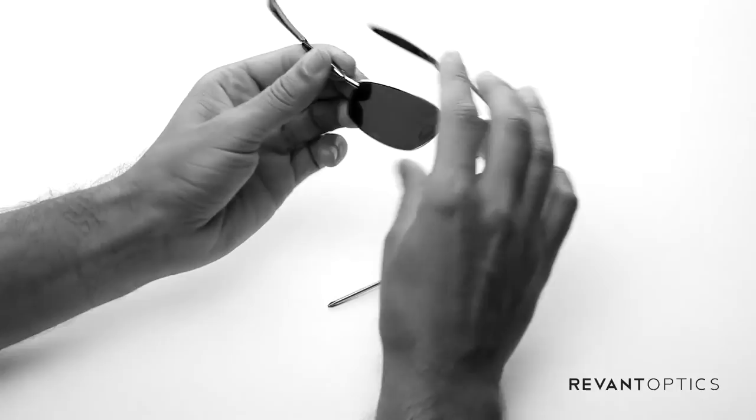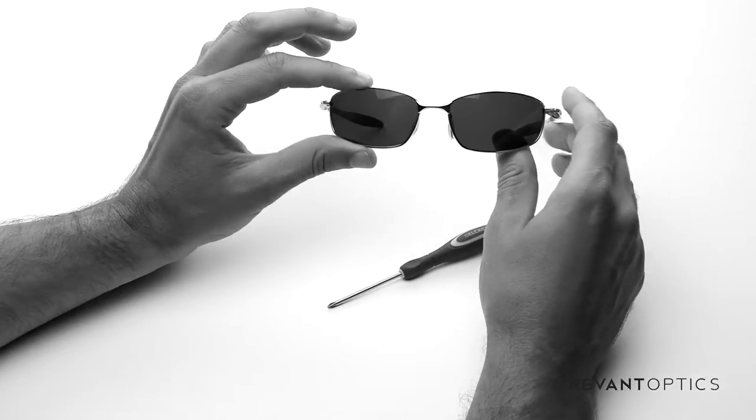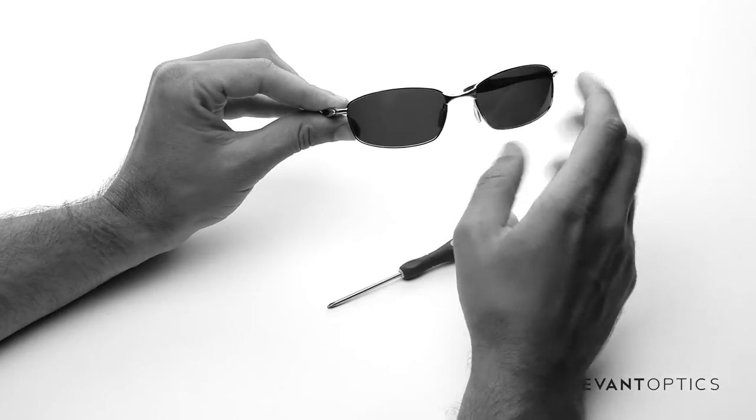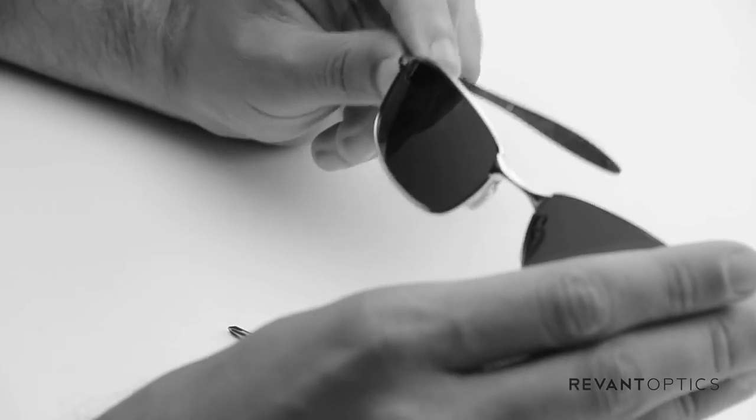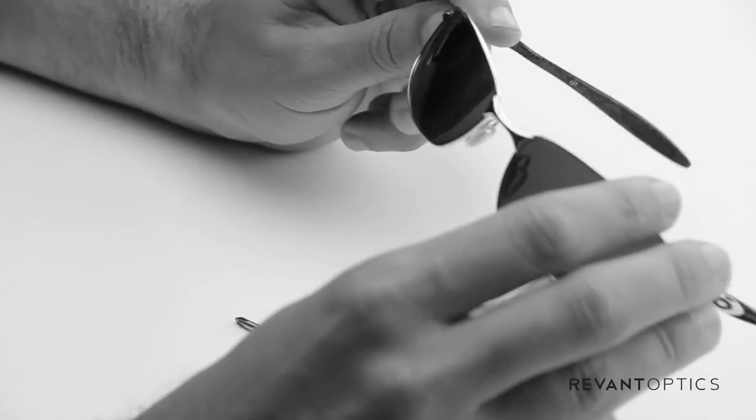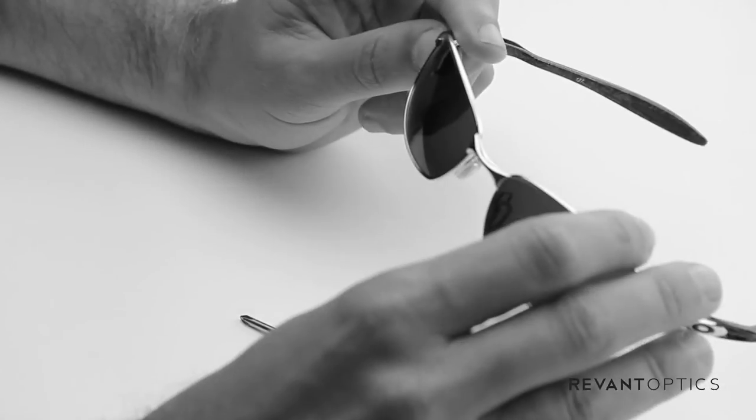And so yeah, that's how you remove and install the lenses in your Oakley Blender sunglasses. You can find a variety of lenses at RevantOptics.com. These particular lenses are Stealth Black Polarized. They're great for really any weather condition.